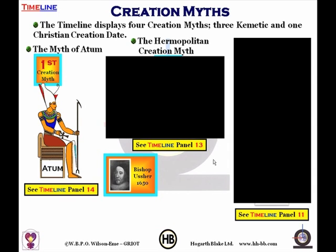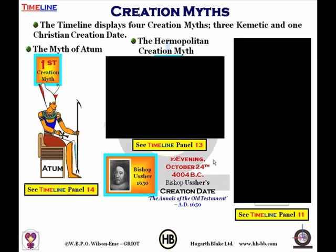Bishop Usher, in AD 1650 — not Usher the singer from the USA — Bishop Usher said in his book The Annals of the Old Testament, written in AD 1650, that the world was finally created in the evening of October the 24th in 4004 BC.